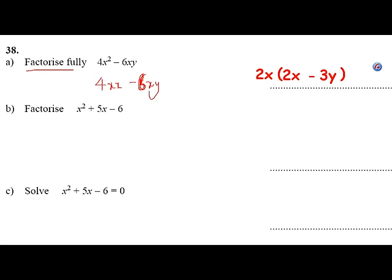Now, just check it. Go through it. 2x times 2x is 4x squared. 2 times 3 is 6. x times y is xy, so I'll get the 6xy as well. Do watch out for this. Fully factorize means to factorize it completely. There are letters and numbers that are common to both, and it's the biggest number that's common to both, or can go into both numbers as well.